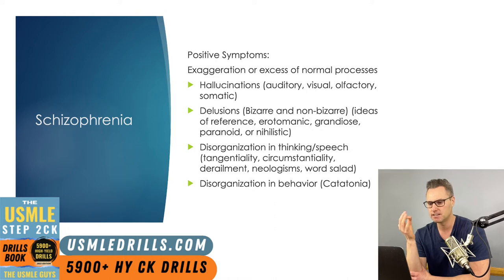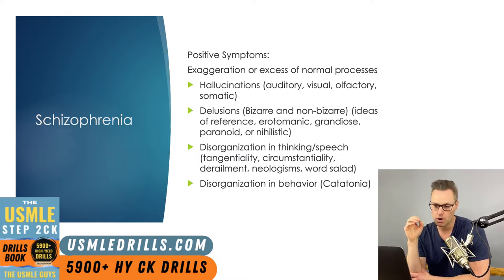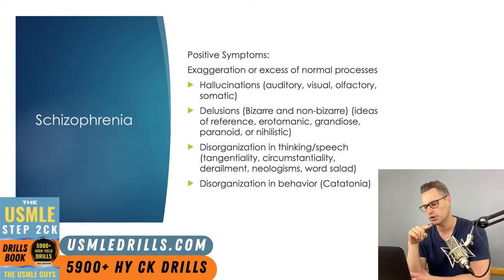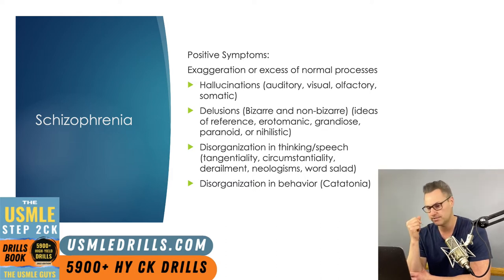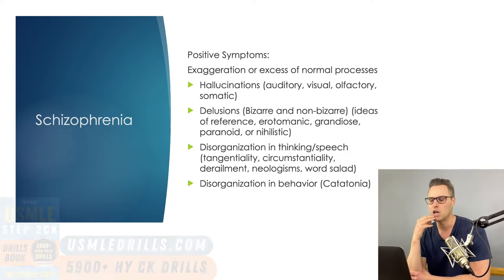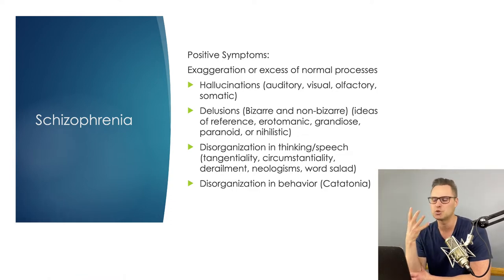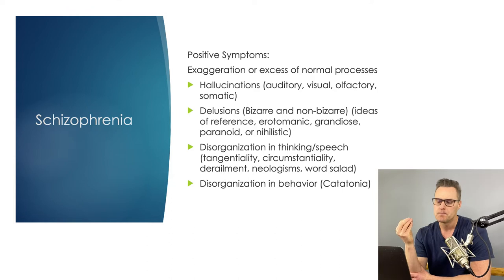Now let's talk schizophrenia and schizophreniform disorders because they have the same symptoms but different duration. Schizophreniform disorder lasts from one month to six months, while schizophrenia is present for six months or longer. The symptoms of schizophrenia can be divided into positive and negative symptoms. Positive symptoms are things like hallucinations, delusions, or disorganized thinking or behavior — things that are added to the person's demeanor. Negative symptoms are things that are missing.